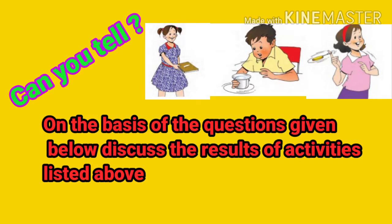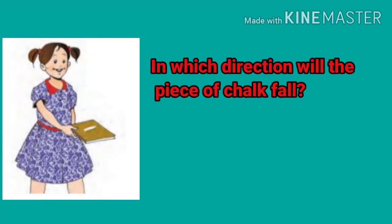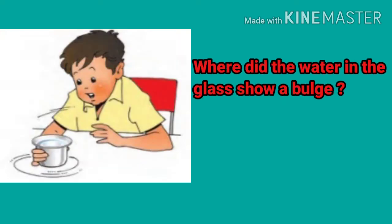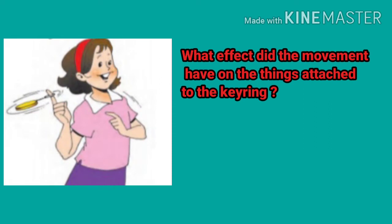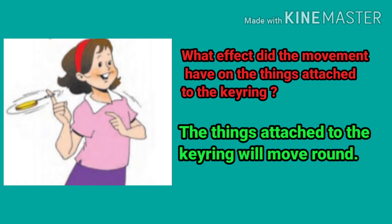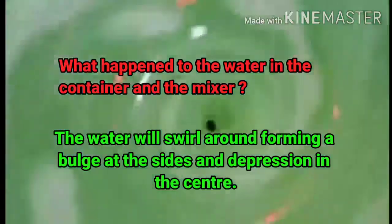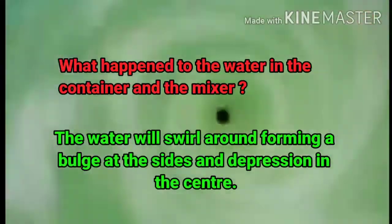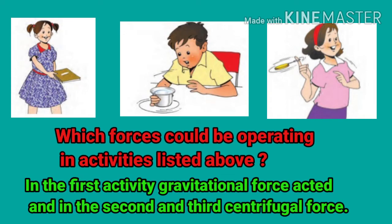On the basis of the questions given below, discuss the results of the activities listed above. In which direction will the piece of chalk fall? The chalk will fall to the right. Where did the water in the glass show a bulge? At the sides of the glass. What effect did the movement have on the things attached to the keyring? The things attached to the keyring will move round. What happened to the water in the container and the mixer? The water will swirl round, forming a bulge at the sides and a depression in the center. Which forces could be operating in these activities? In the first activity, gravitational force acted, and in the second and third it is centrifugal force.